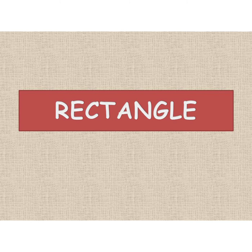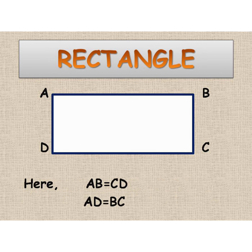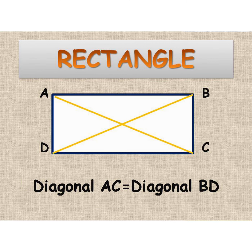The first one is a rectangle. A rectangle is a quadrilateral whose opposite sides are equal. The length of side AB is equal to the length of side CD. Similarly, the length of side AD is equal to the length of side BC. The diagonals of a rectangle are also equal. The length of diagonal AC is equal to the length of diagonal BD.